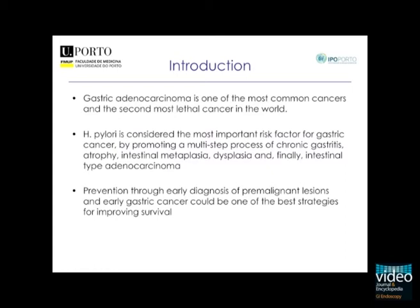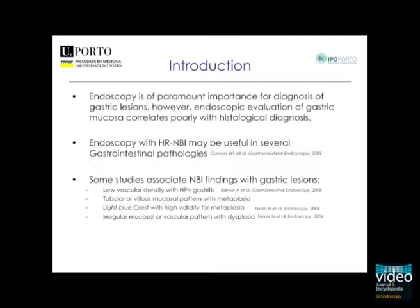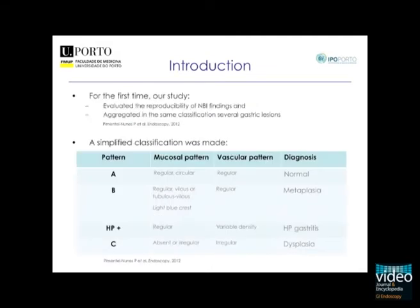Gastric cancer is one of the most common and lethal cancers in the world, with Helicobacter pylori being the main risk factor. Although prevention through early diagnosis of precursor lesions could be the best strategy, correlation between endoscopy and histology is poor. We proposed a simplified narrowband imaging (NBI) classification, reproducible and accurate for the diagnosis of gastric pre-neoplastic and neoplastic lesions.